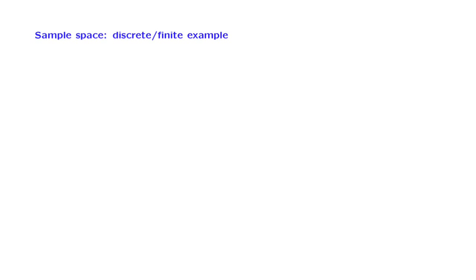Let us now look at some examples of sample spaces. Sample spaces are sets, and the set can be discrete, finite, infinite, continuous, and so on. Let us start with a simpler case in which we have a sample space that is discrete and finite.